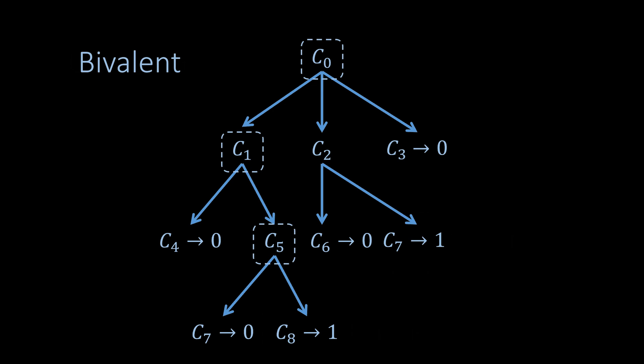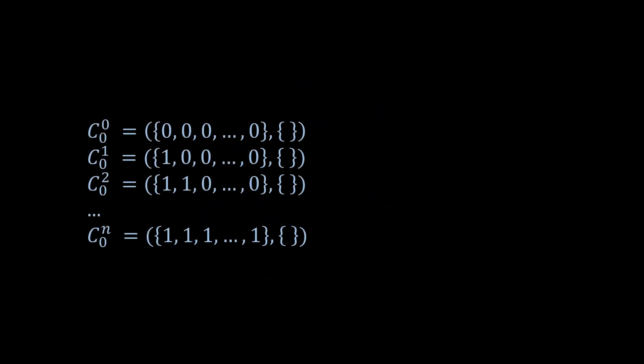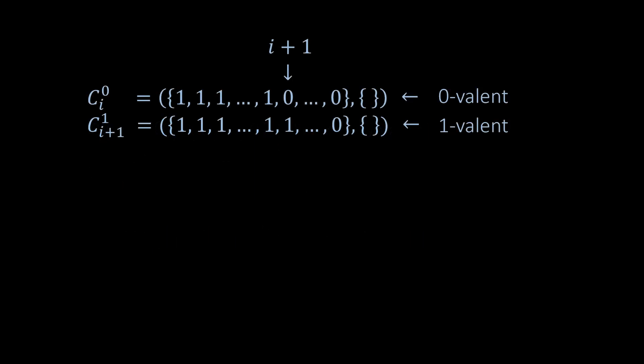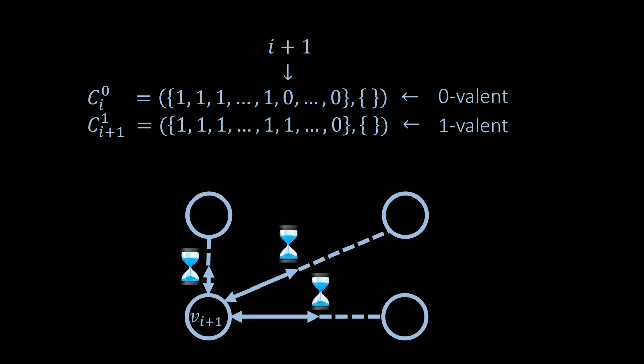Obviously, the goal is to transition from a bivalent configuration to a univalent configuration. But are there really bivalent configurations where the outcome is not yet determined? We consider n+1 possible initial configurations. In the first, all nodes start with value 0. In the second, only the first node starts with value 1. In the third, only the first two nodes start with value 1, and so on. Since a correct consensus algorithm must satisfy the validity property, the first configuration must be zero-valent and the last must be one-valent. If all configurations are univalent, there must be at least one index where the switch from zero-valent to one-valent happens. What happens if messages to and from the node at that particular index are very slow?